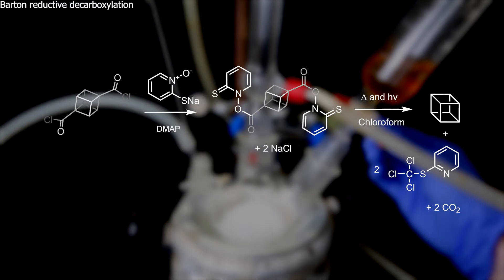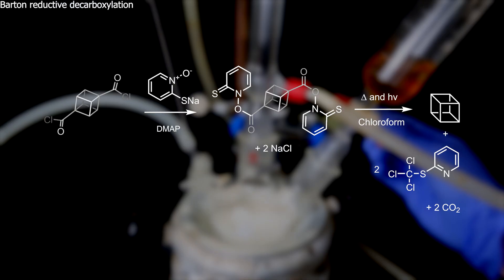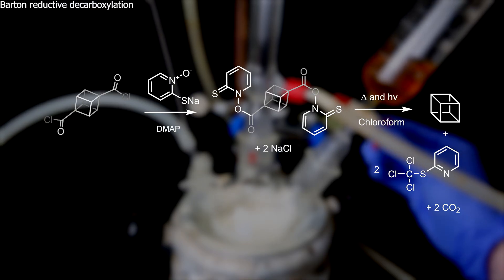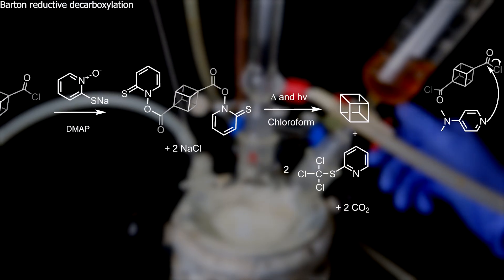In the reactions, the acid chlorides first react with the 2-mercaptopyridine N-oxide sodium salt to form two thiohydroxamate esters, catalyzed by DMAP. This thiohydroxamate ester is completely removed by the action of heat and visible light, where chloroform acts as both a hydrogen donor and solvent to produce cubane. In more detail, DMAP is a great nucleophile and easily attacks the carbonyl carbon.